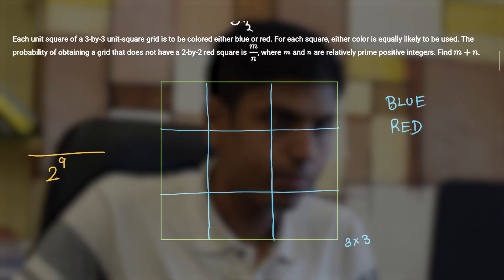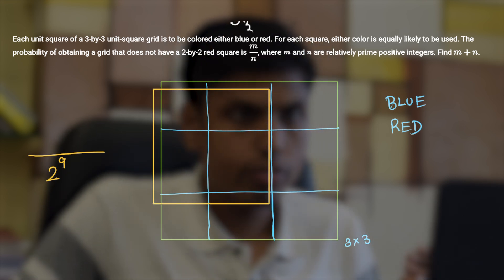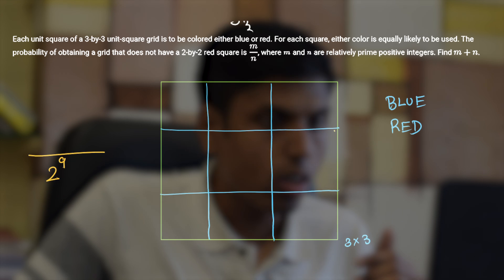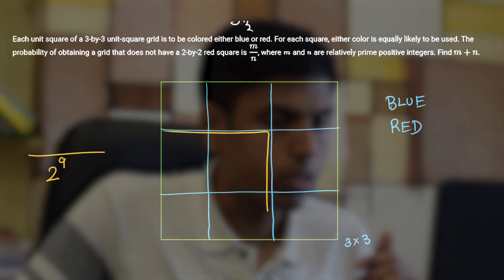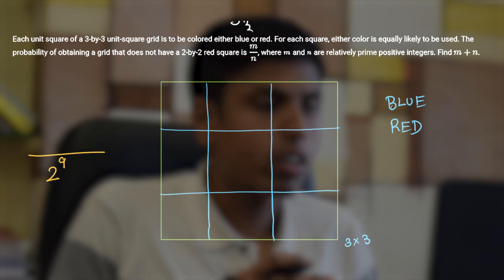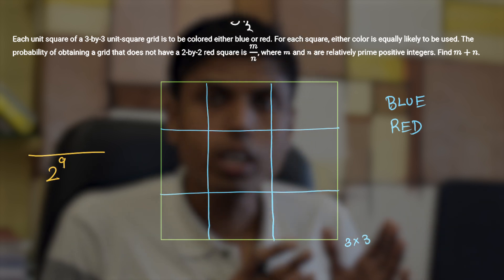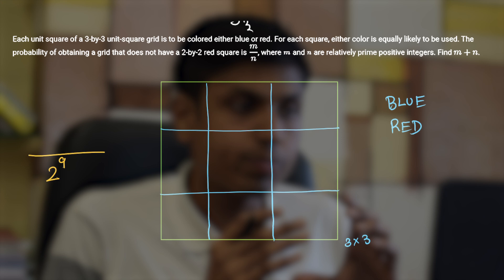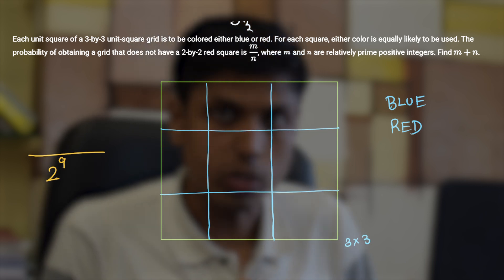So first realize that a 2 by 2 square grid can be in the top left corner or in the top right corner or in the bottom right corner or in the bottom left corner. So there are four 2 by 2 grids that can be colored completely red. So when we talk about existence we will be actually finding or estimating the probability for existence of at least one of these 2 by 2 red squares.